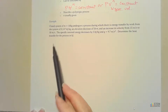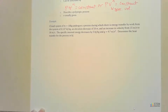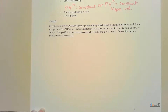Now let's read it. We've got a closed system with a mass of 10 kilograms undergoing a process during which we have an energy transfer by work from the system of 0.147 kilojoules per kilogram. We've also got an elevation decrease of 50 meters and an increase in velocity from 15 meters per second to 30 meters per second. The specific internal energy decreases by 5 kilojoules per kilogram and gravity is 9.7 meters per second squared. We want to find the heat transfer for this process in kilojoules.